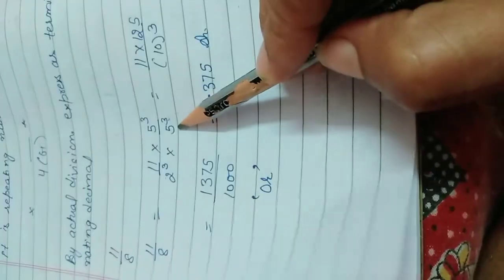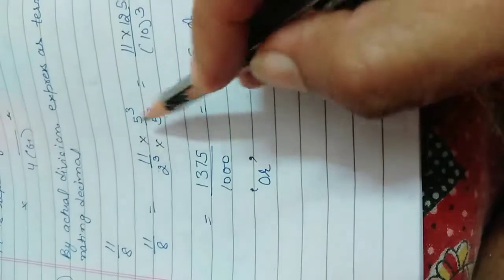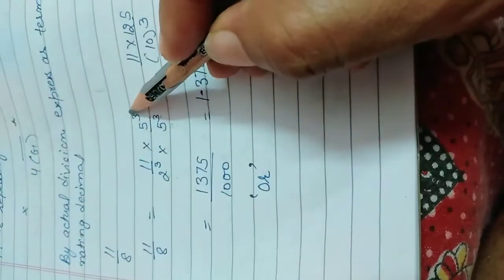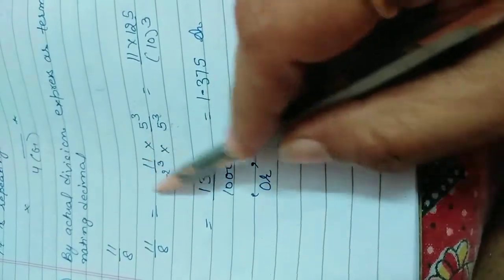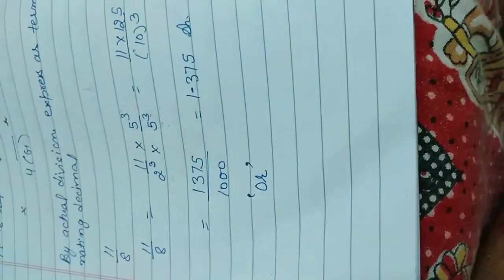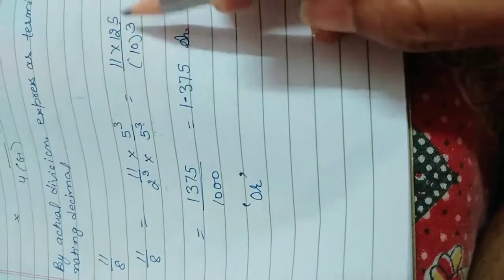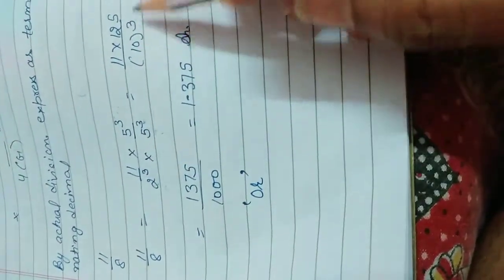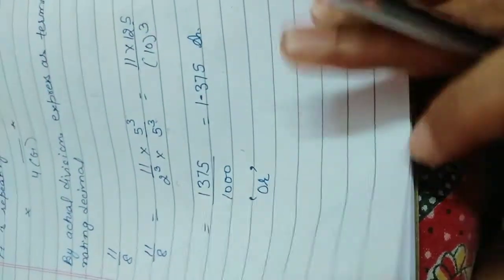Whatever you are multiplying with the denominator, the same number should be with the numerator. Why? The reason behind it, because if you divide it, answer will be 1. And we can multiply, if we multiply any number with 1, then there is no change. So that's why we get this answer. This becomes 10 cube and 1375 by 1000, we get this answer easily.